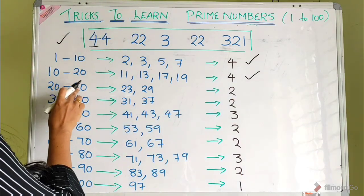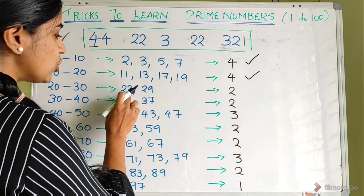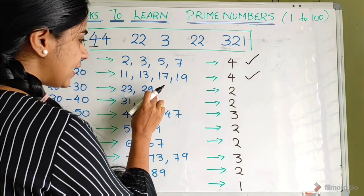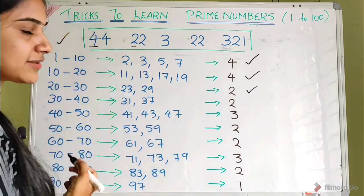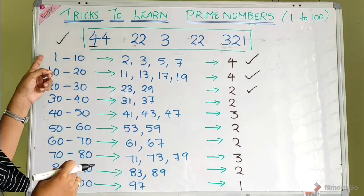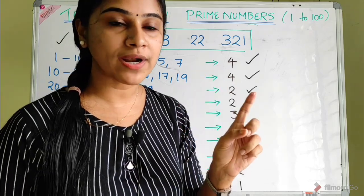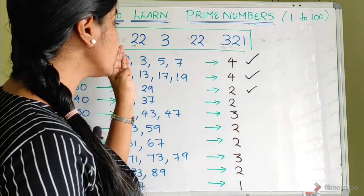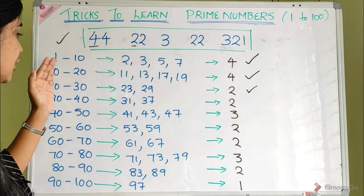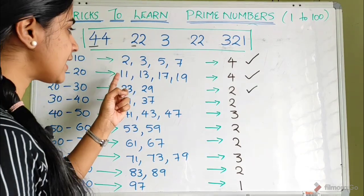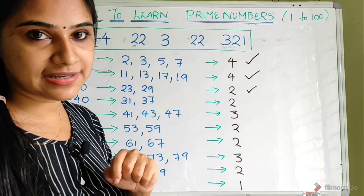Between 1 and 10, there are 4 prime numbers: 2, 3, 5, and 7. Between 10 and 20, there are 4 prime numbers: 11, 13, 17, and 19. Between 20 and 30, there are 2 prime numbers: 23 and 29.